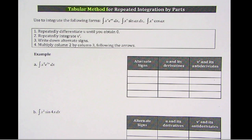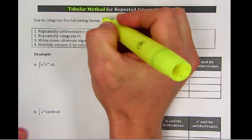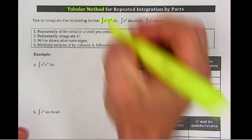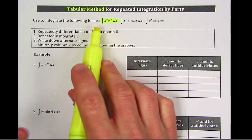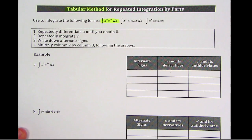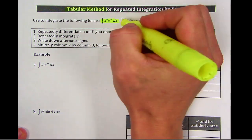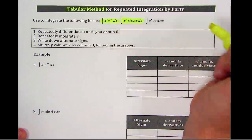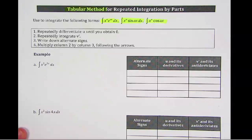And you can use this to integrate the following forms, which hopefully you're pretty familiar with now. We have x and e to the x, x and sine x, and x and cosine x.